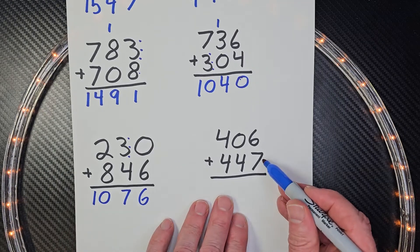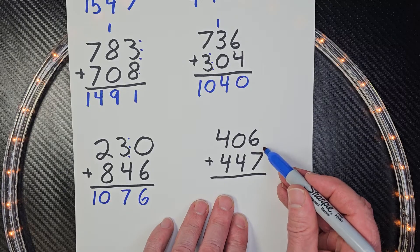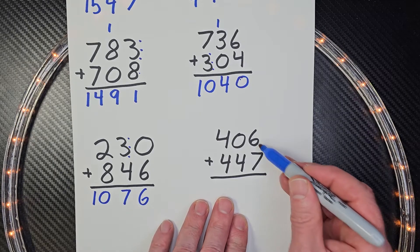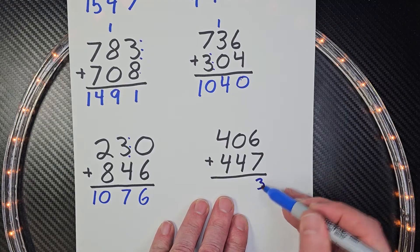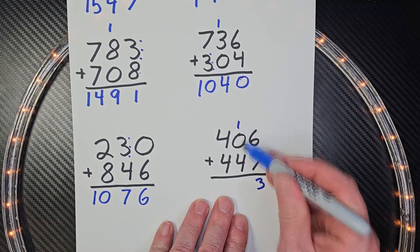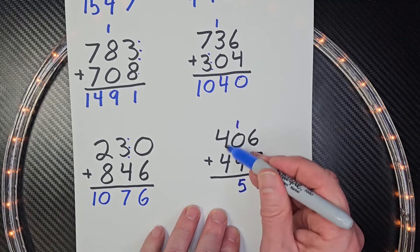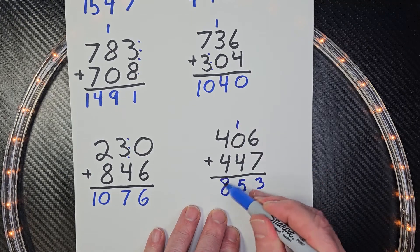And then we have our last problem. I don't know why I'm talking like a ghost. Just having fun here. Six plus seven is thirteen. Carry the one. Four plus one is five, and then four plus four is eight.